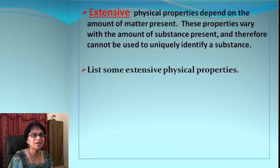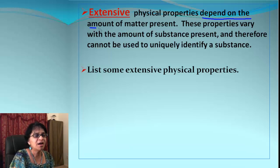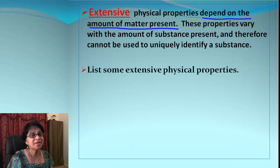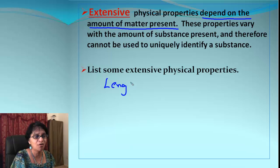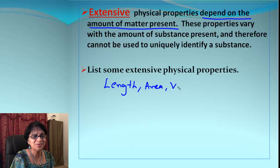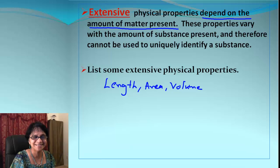Physical properties have two different types: extensive and intensive. Extensive properties always depend upon the amount of matter present — if the amount changes, the property will change. Examples of extensive physical properties include length. If I have a long ribbon and cut it into small pieces, the length will change, and so will area and volume.